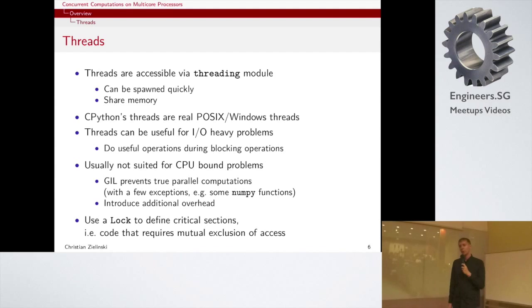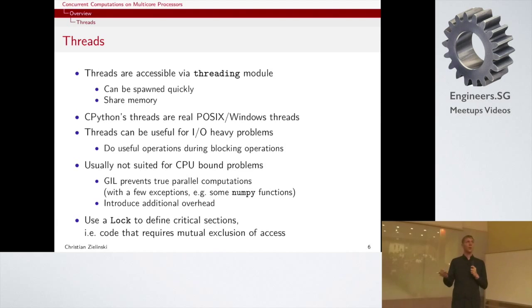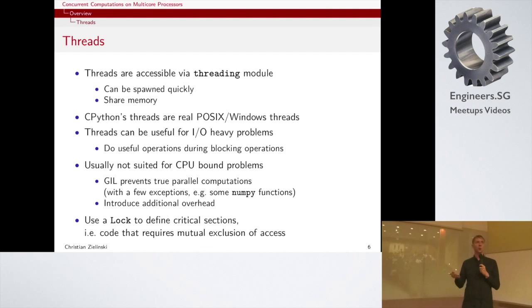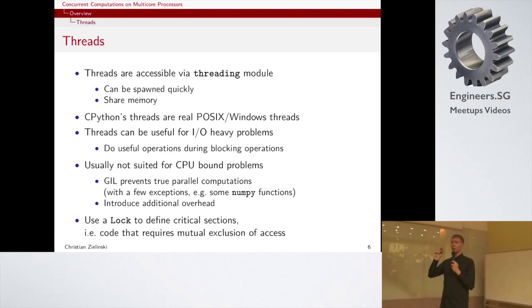In general, if you want to do concurrent computations, there are usually some critical sections in your code — sections that should not be executed by more than one thread or sub-process at the same time. For example, if you're writing to a file, you don't want several threads writing to the same file simultaneously. In general, I/O on a desktop computer is serial, so you define a critical section and protect it using a lock. Whenever you see code framed by locks, it means that section can only be executed by one sub-process or thread at a time.